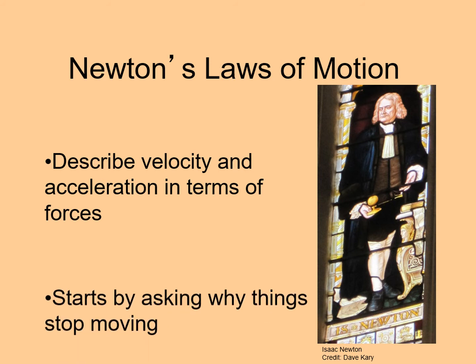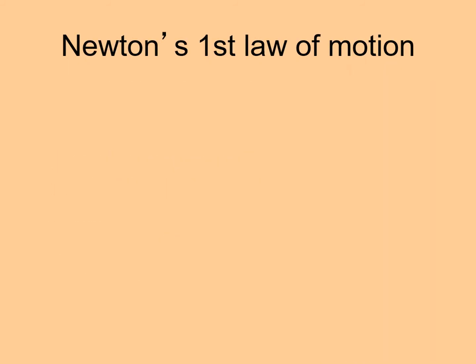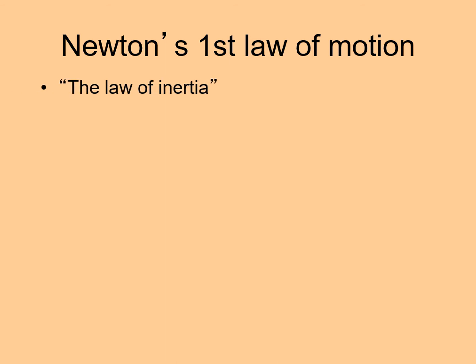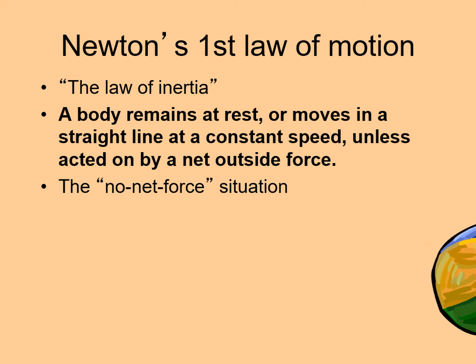But as mentioned earlier, Newton's laws start with a surprising question: why do things stop moving? Newton's first law of motion — sometimes called the law of inertia — says that a body remains at rest or moves in a straight line at a constant speed, unless acted on by a net outside force. This is the no-net-force situation, where all of the forces are balanced. The first law says that the motion isn't changing: if something is at rest, it stays that way; if it's moving along at a constant velocity, it stays that way.